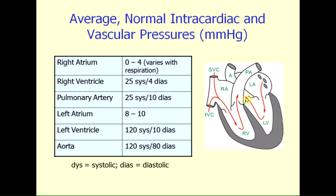Finally, for the aorta, as the left ventricle ejects blood into the aorta, the aortic peak or systolic pressure will be roughly the same as the systolic pressure within the left ventricle — about 120 millimeters of mercury. As the left ventricle begins to relax and the aortic valve suddenly closes, that helps prevent the aortic pressure from falling to a very low value. So its diastolic pressure is typically around 80 millimeters of mercury.